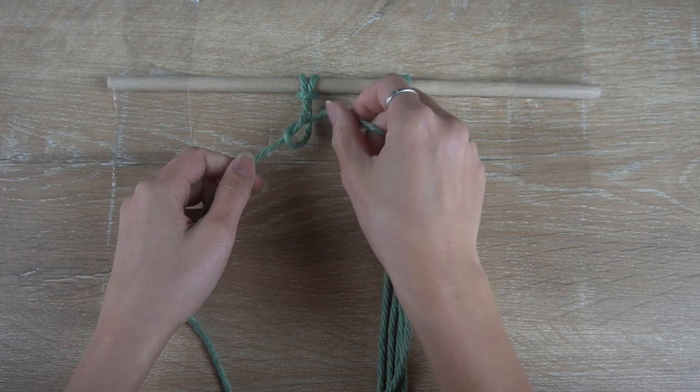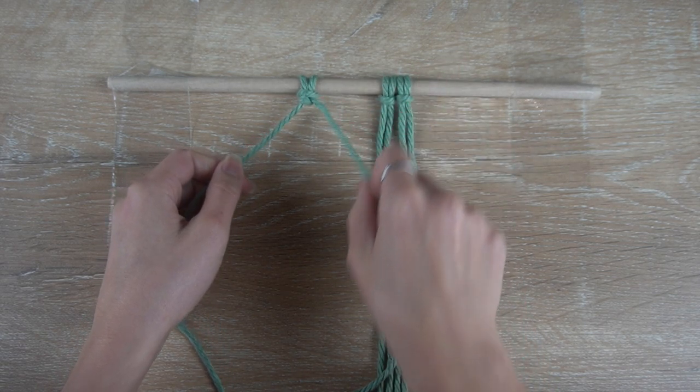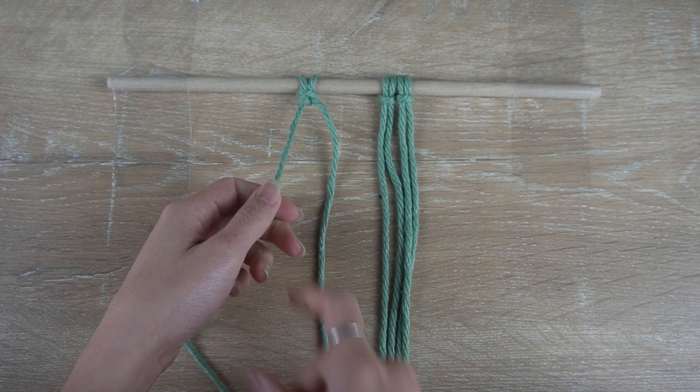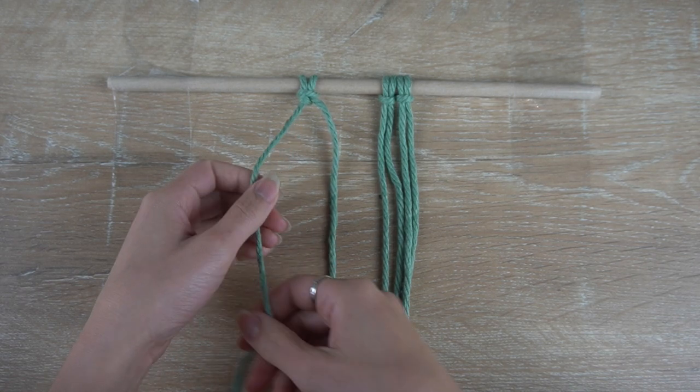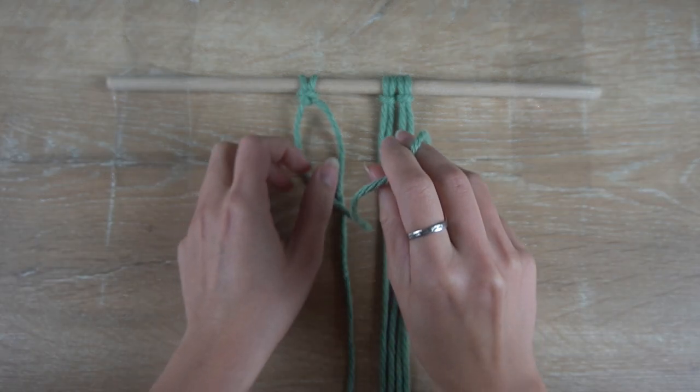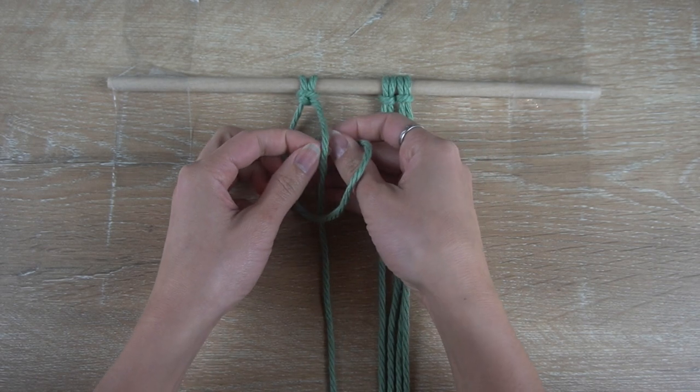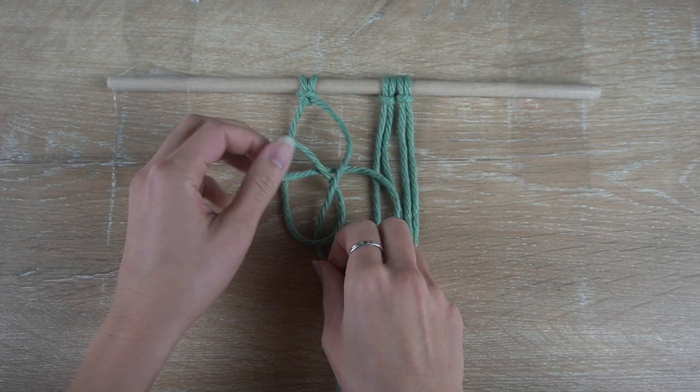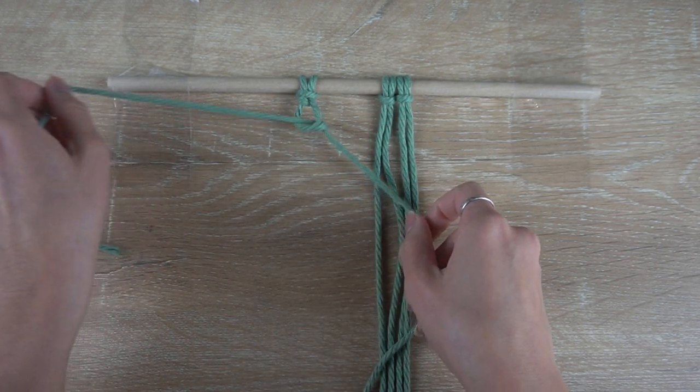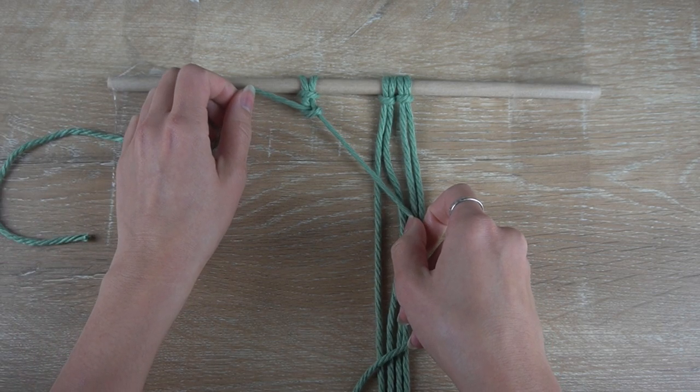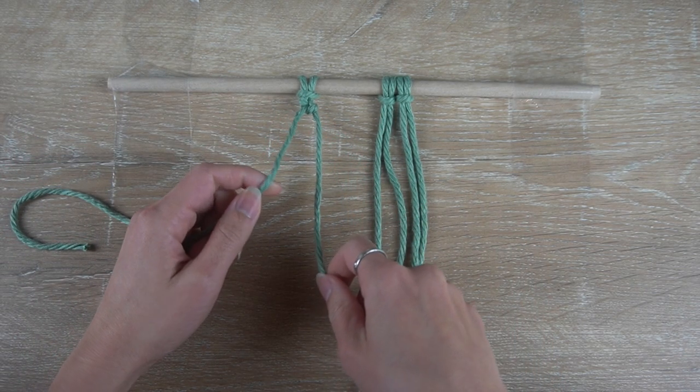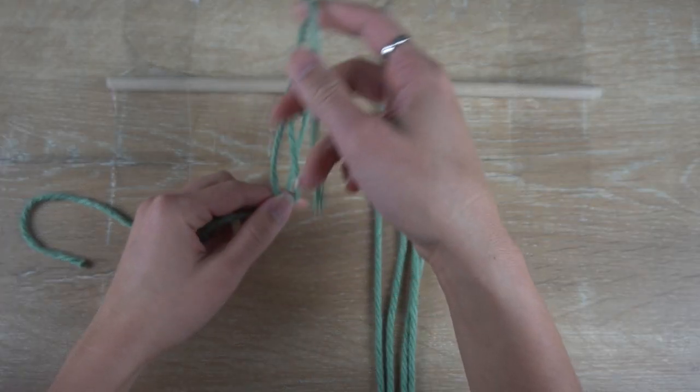As you can see, I have started by using the right cord as the working cord for a half hitch knot on the left cord. Now I'm going to alternate and use the left cord as the working cord for a half hitch knot on the right cord. All you have to do is continue this pattern and you will get an alternating half hitch chain using two strands of cord.